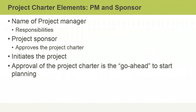Think of the project management plan as the user manual for your project. The project management plan answers the questions of how you will go about performing project work. Each element of the project will have its own subsidiary management plan. The subsidiary plans include scope, schedule, budget, quality, human resources, communication, risk, procurement, and stakeholder. The project manager must ensure that all of the subsidiary plans are cohesive and support the overall project vision.